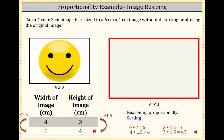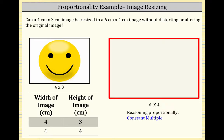Let's look at it from the constant multiple perspective. We're asking: 4 times what is 3? Well, 4 times 3-fourths is 3. So if we want to take 6 times what is 4, we would have to use the same constant multiple of 3-fourths. So 6 times 3-fourths is 18-fourths, which is clearly not 4. So that's not going to work either.